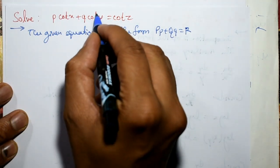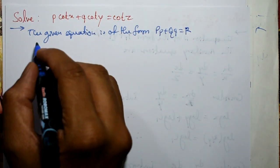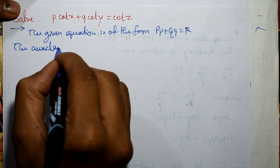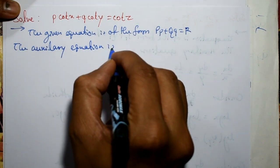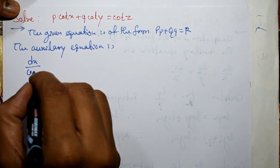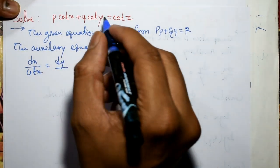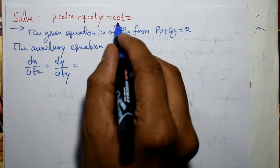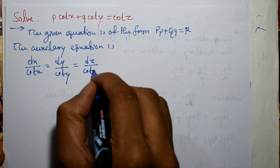This is capital P, capital Q, and this is capital R. Now take the auxiliary equation. The auxiliary equation is dx by capital P, where capital P means cot(x), that is equal to dy by capital Q, where capital Q is cot(y), and that is equal to dz by R, where R is cot(z).